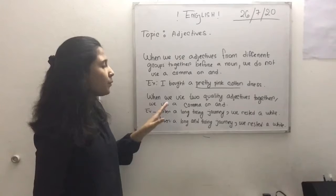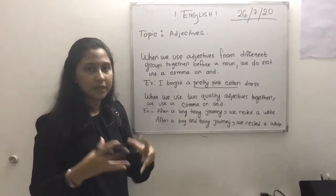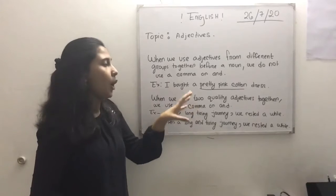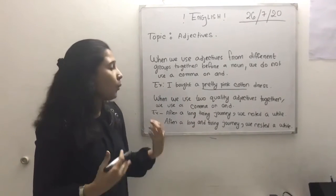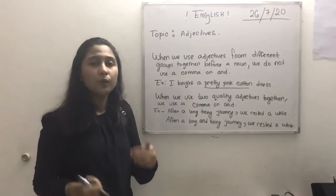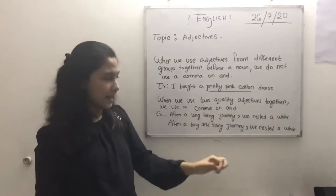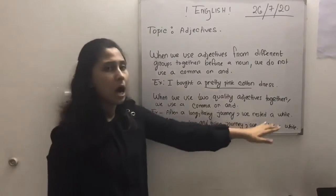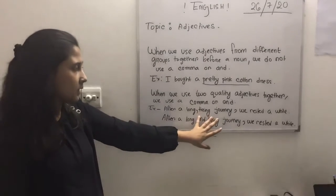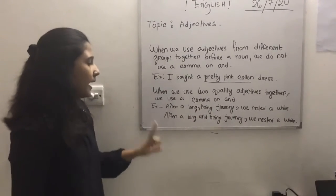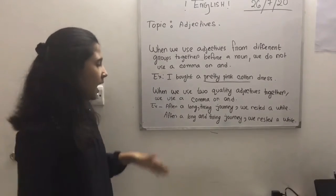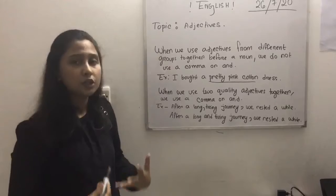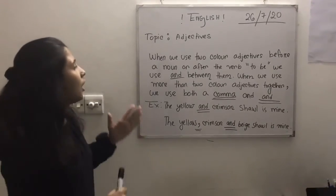When we use two quality adjectives together, we use a comma or 'and'. For example: 'After a long, and tiring journey, we rested a while.' Here we have used a comma because we are using two quality adjectives together. Another example with 'and': 'After a long and tiring journey, we rested a while.' This is what we always need to keep in mind.